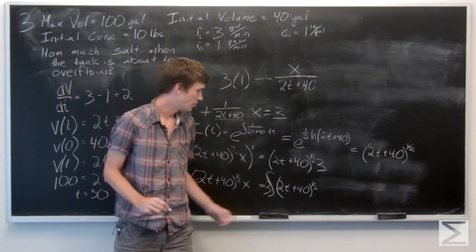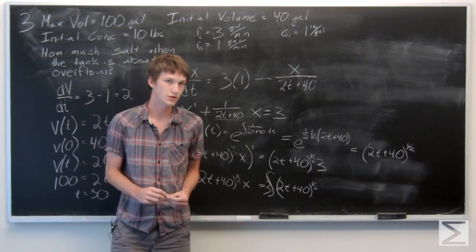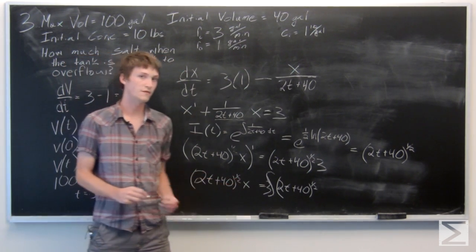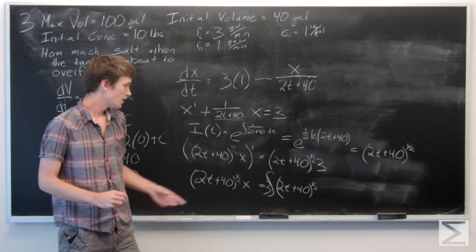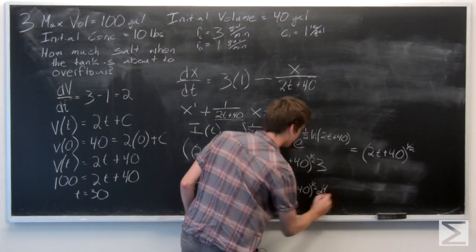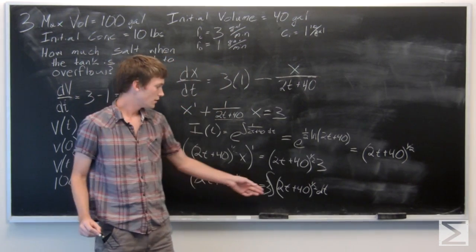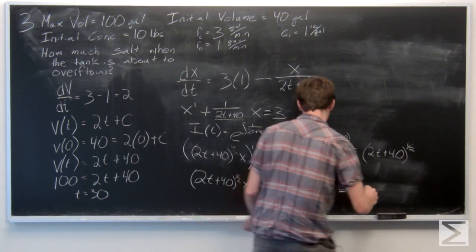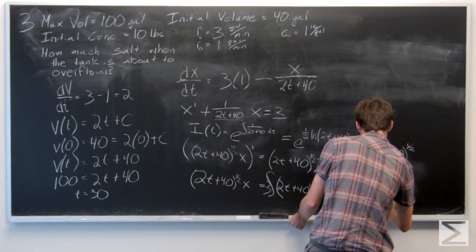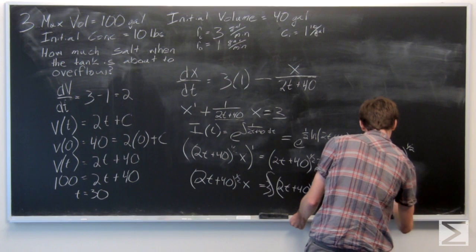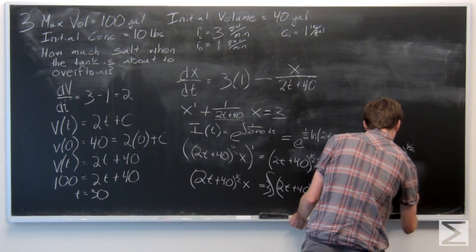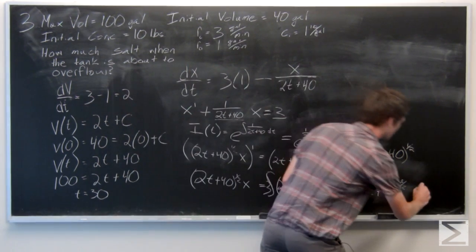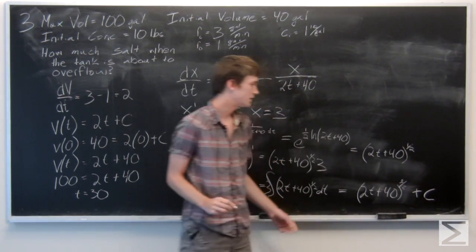Bring the constant 3 out front, we get 3 times the integral of 2t plus 40 to the 1 half is equal to 2t plus 40 to the 1 half times x. So when we anti-differentiate this, we get 2t plus 40 to the 3 halves. Plus our constant c.